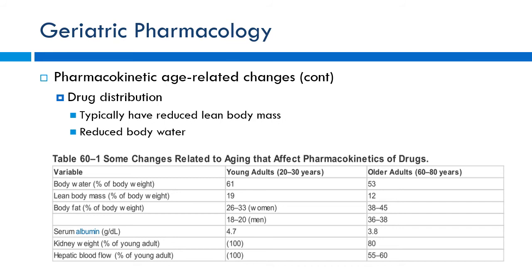One of the big changes that does affect distribution in elderly patients: they have reduced lean body mass — less muscle compared to younger patients — and reduced total body water. Body fat percentage increases with age, so there's more adipose tissue, less muscle mass, and less water overall. Serum albumin is also typically lower due to decreased protein production. For lipophilic medications, volume of distribution increases due to more adipose tissue. For hydrophilic medications, it decreases because there's less body water.